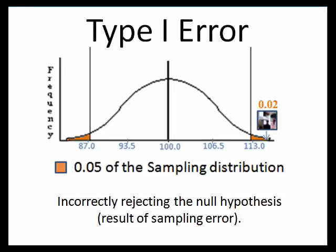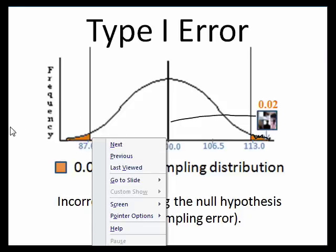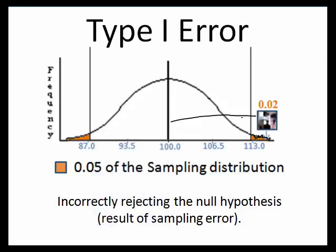When we make an error — when the null hypothesis is correct and drinking vitamin water is no more helpful than tap water — we'll get a difference between the population mean and sample mean big enough to lead us to incorrectly reject the null 5% of the time. If you do enough research, you will occasionally incorrectly reject the null hypothesis; your evidence is bogus, just due to sampling error. That type of error — incorrectly rejecting the null hypothesis — is called a Type 1 error.